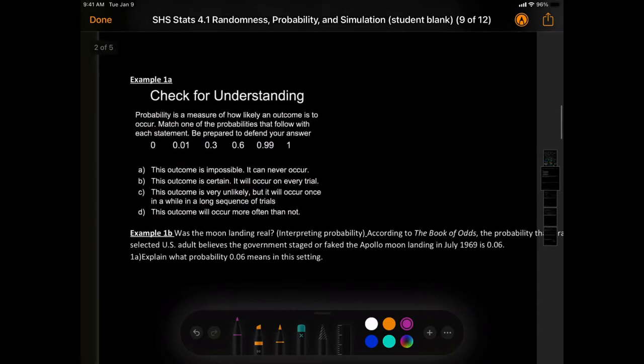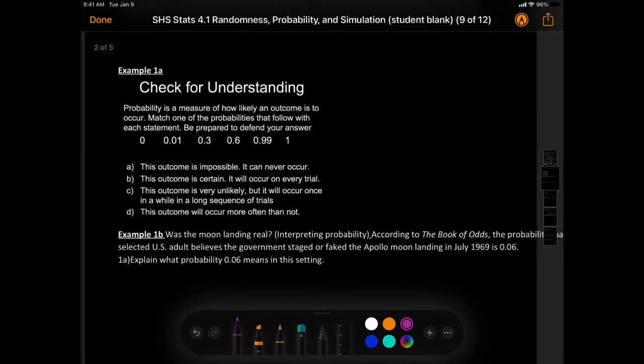Page 2. Example 1A. Check for understanding. The probability is a measure of how likely an outcome is to occur. Match one of the probabilities that follow with each estimate. Be prepared to defend your answer. So, basically what you're doing, you're just going to write some kind of number over here to the side. One of these five. And then press play when you're done.